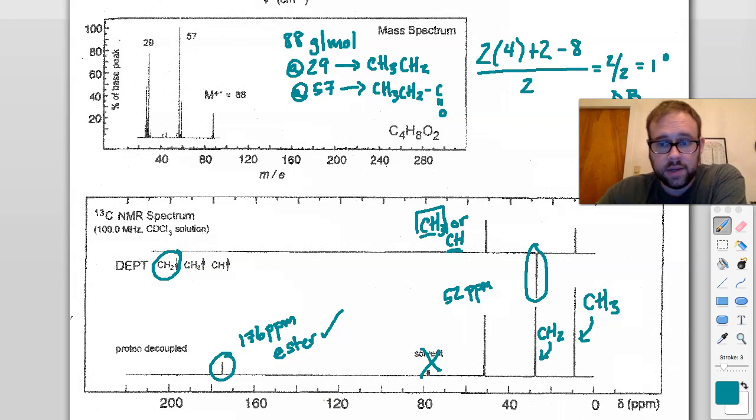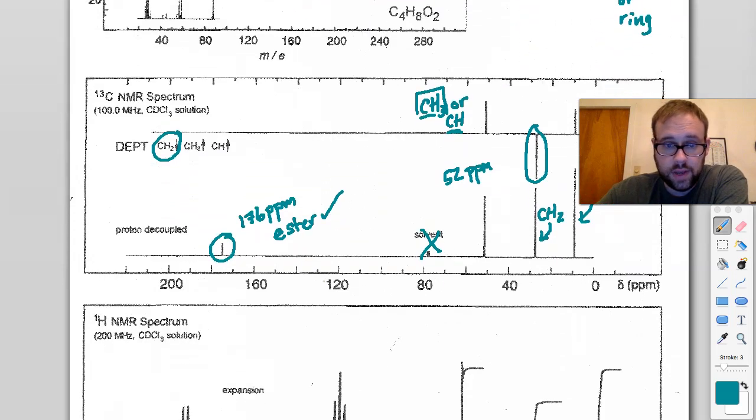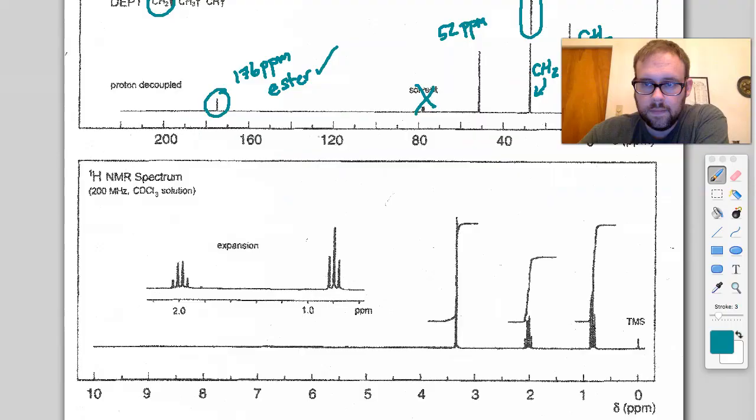So if we continue forward, let's go down to the proton NMR. All right, now, for the proton NMR, we see a total of three signals. So if you take a look, there's an expansion here for the first two signals. And we can see very clearly that there is a quartet here, and there is a triplet here. Now, the integration here, it didn't scan properly, is three, two, and three.